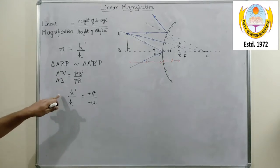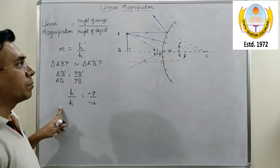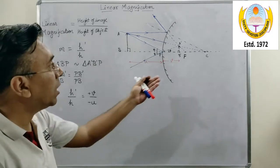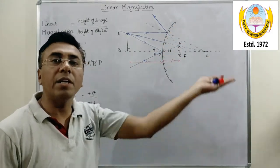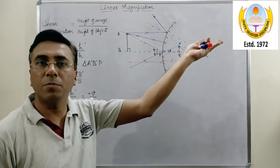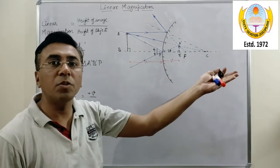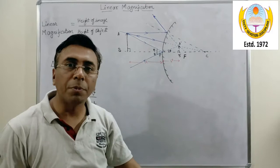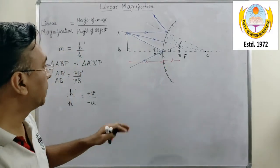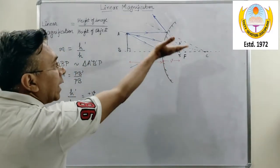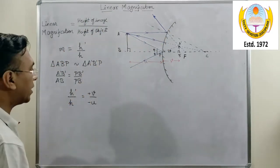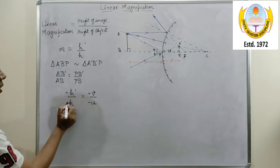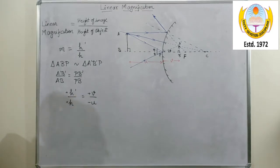Now what about h' and h? h' over here will be positive because the image is getting formed above the principal axis. So anything vertically which we measure above the principal axis is positive, and anything which we measure vertically below the principal axis is negative. So over here both h' and h are above the principal axis, so both these terms will be positive.